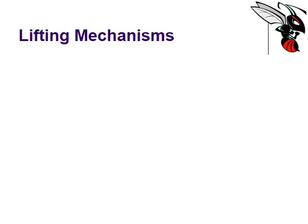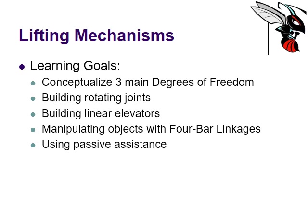Hello Engineering Central, this is Mr. B again and today we're going to talk about lifting mechanisms. Up to this point we have talked about mechanical advantage, idler gears, compound gear systems, and drivetrains. Now the last thing for most competition robotics is we're going to have to try and lift something. The learning goals for this lesson are to conceptualize three main degrees of freedom, how to build rotating joints, linear elevators, four-bar linkages, and passive assistance.